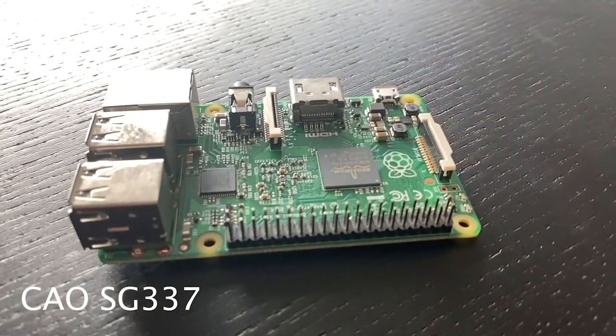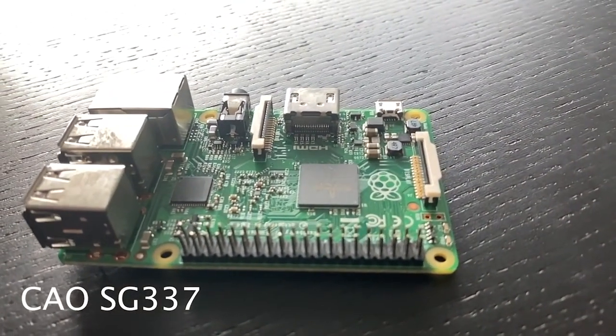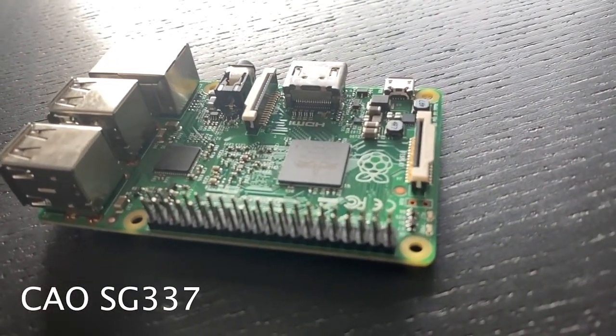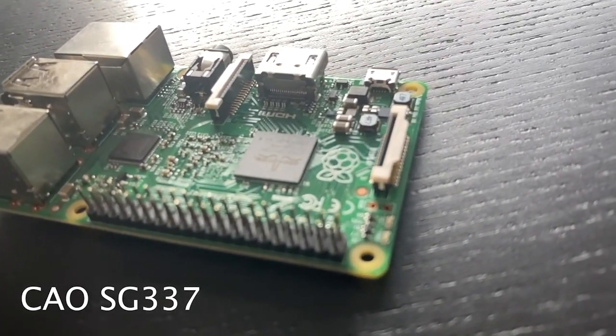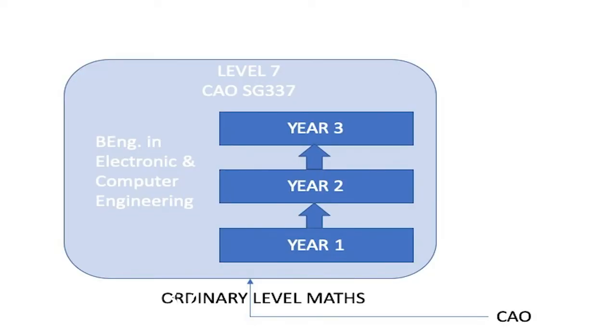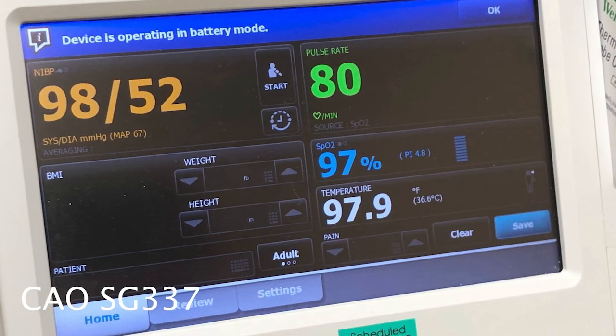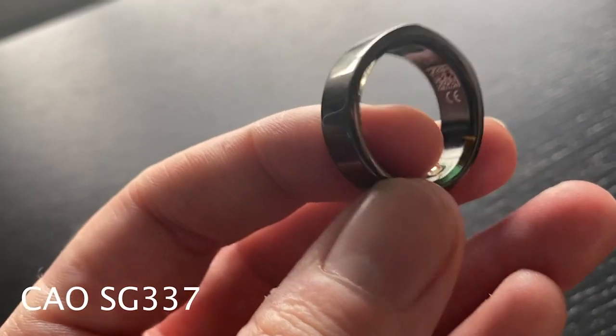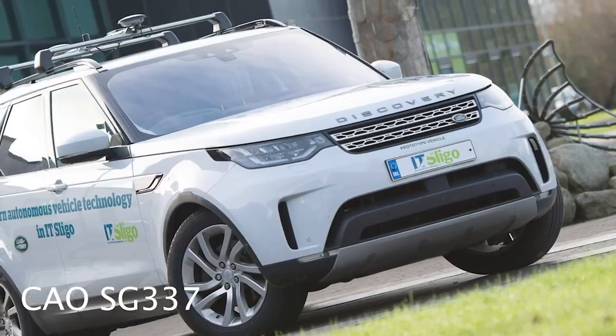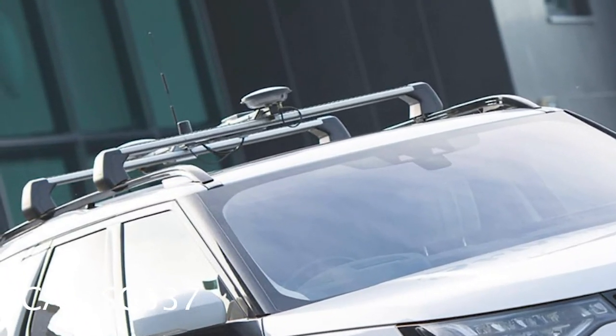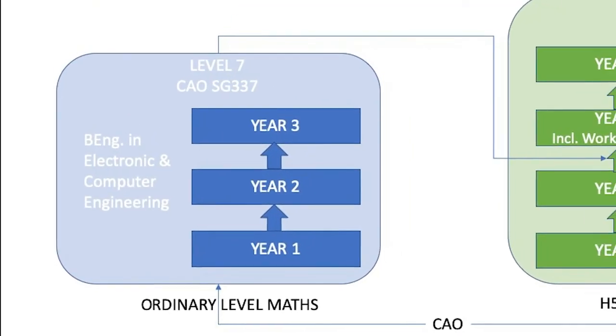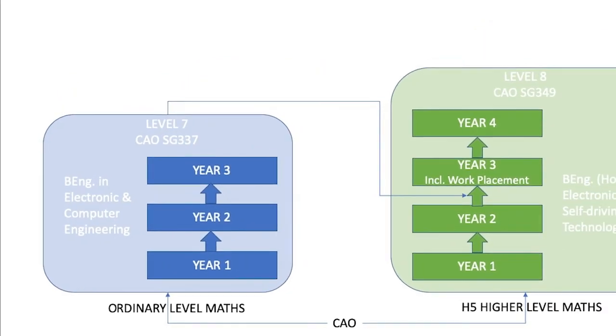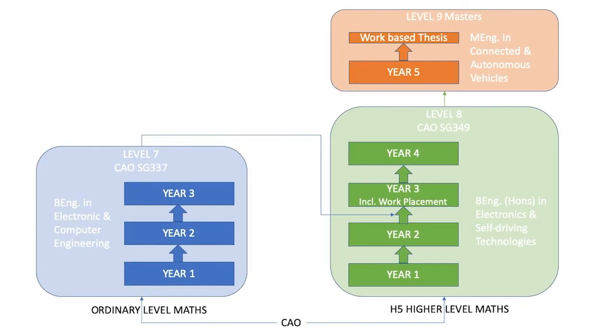If you are interested in technology or engineering but are not doing higher level maths, why not consider our level 7 in electronic and computer engineering. This is a three-year program that looks at the design and development of embedded electronic systems. These are the medical devices that keeps us healthy, the consumer devices that keeps us entertained, or the controlled systems that keeps us safe on the road. You can then progress onto the level 8 in electronics and self-driving technologies and from there to the masters. Check out the link below for more information.